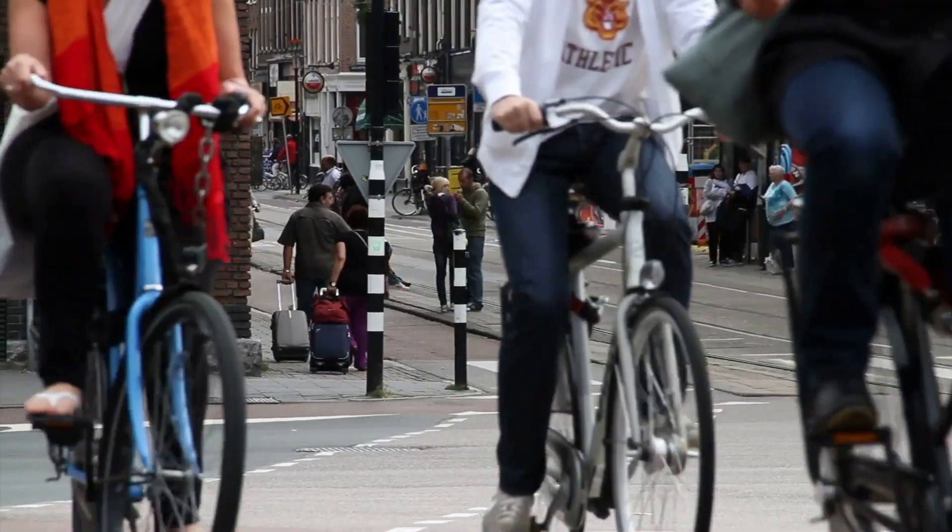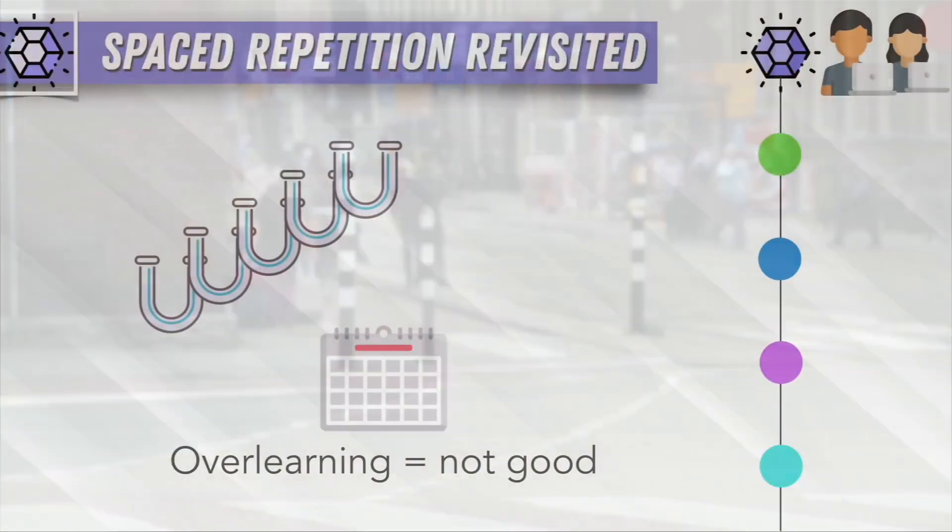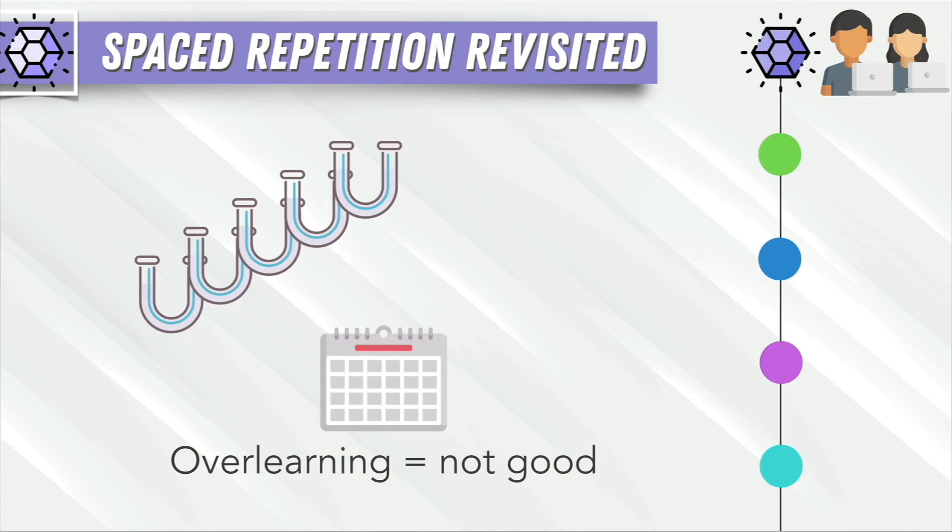And because you've used spaced repetition so much, you can take a break for two years, three years from riding a bike and you'll probably still be able to ride a bike because those neuron connections are so strong. Which is actually good news - you don't have to do spaced repetition over and over. After a certain point those neuron connections get strong enough that you don't have to repeat as often, only once in a while.